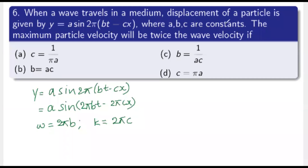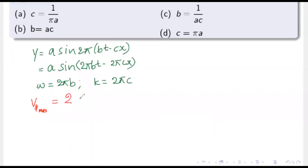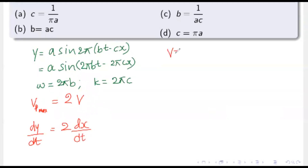The question asks at what values of a, b, and c the maximum particle velocity is twice the wave velocity. So the condition is: maximum particle velocity (dy/dt)_max = 2 times wave velocity. Wave velocity v = ω/k = 2πb divided by 2πc = b/c.